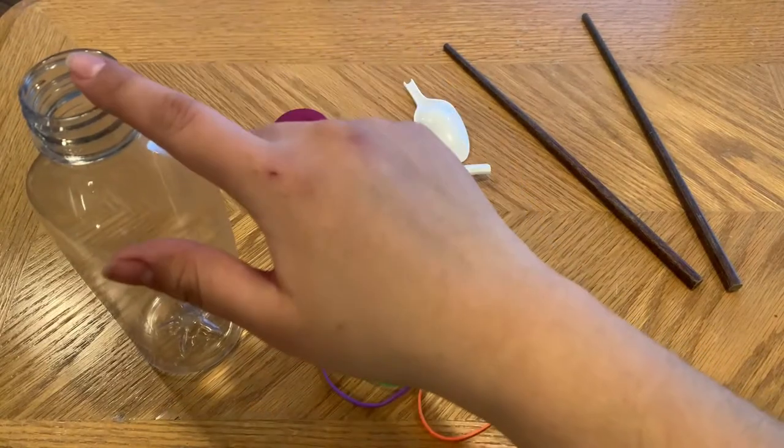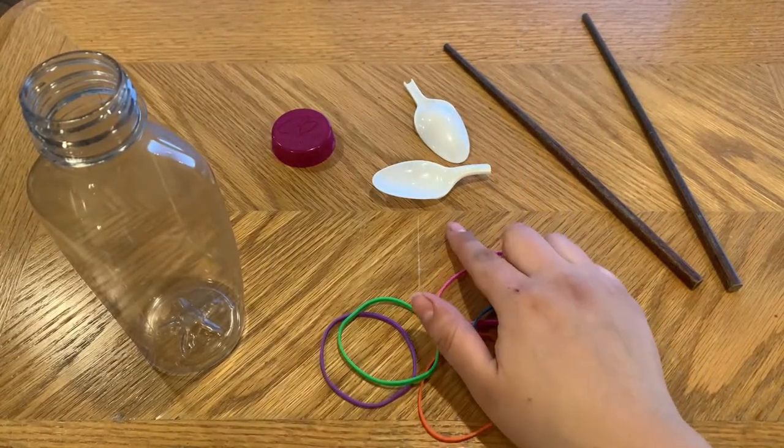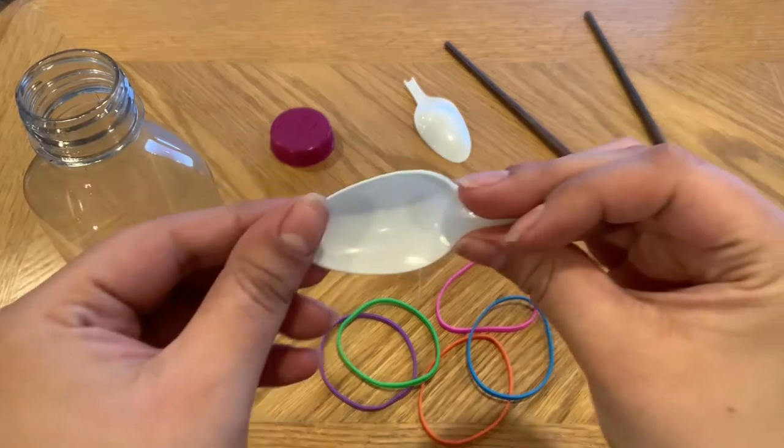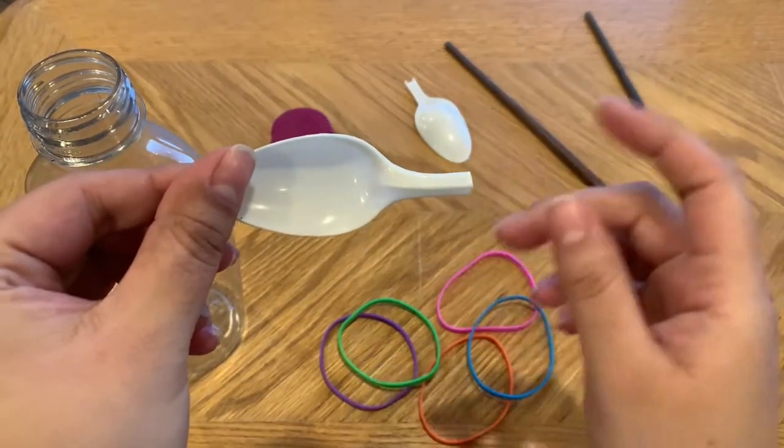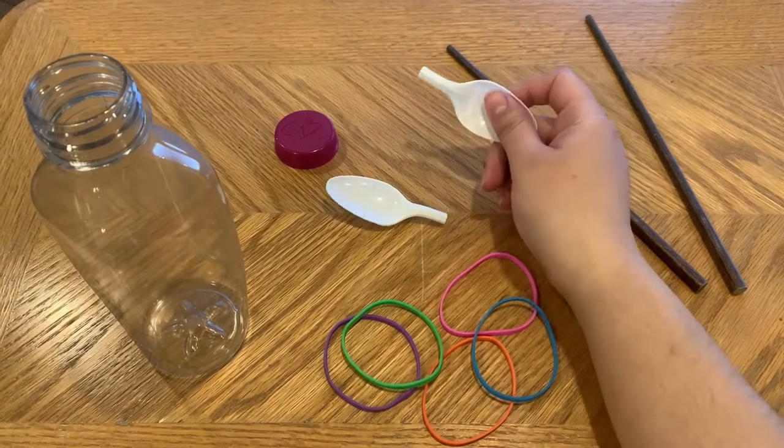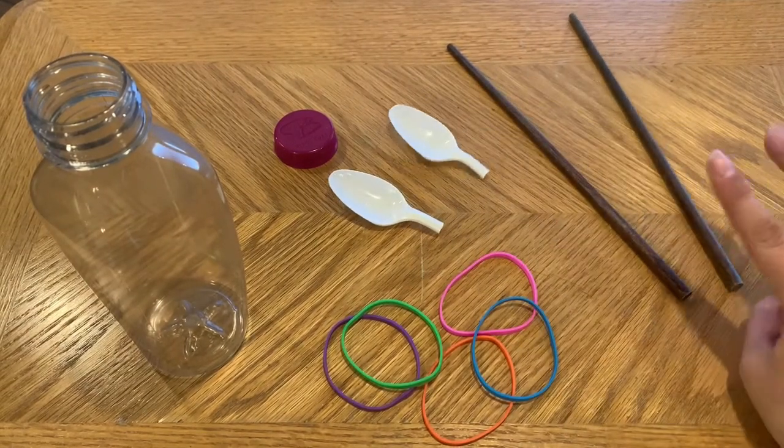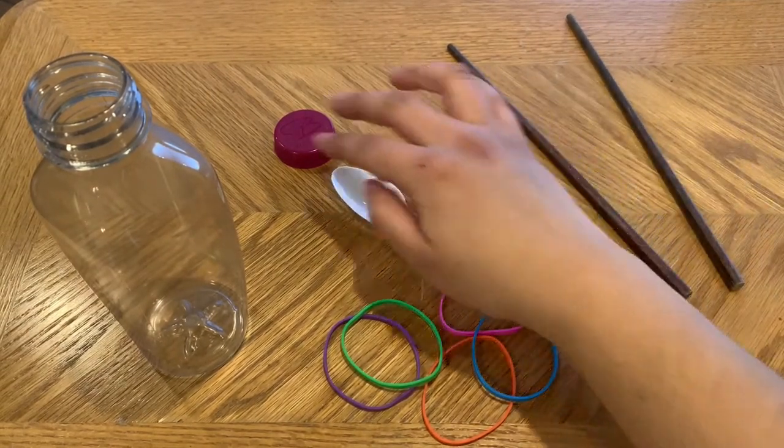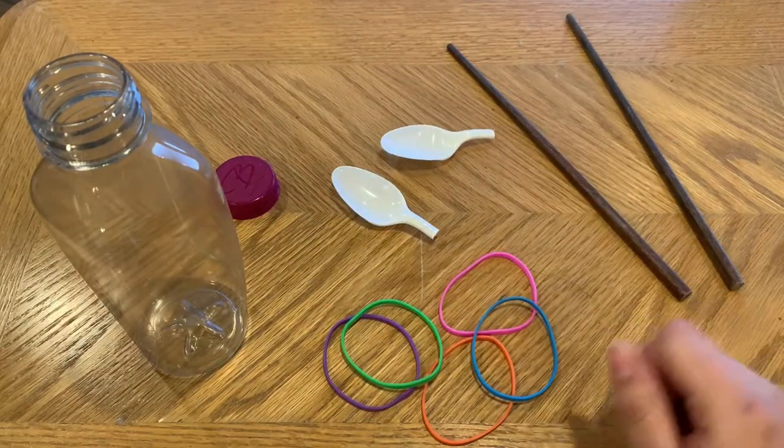These are mostly made from recycled materials and household items I found around my house. I cut two spoons just before the scoop but left a little bit of space near the bottom so we can attach them together later on. I've got two chopsticks, my two spoons, and we're ready to build our boat.